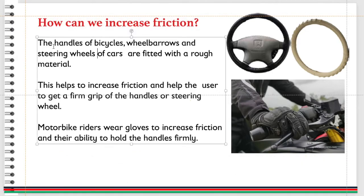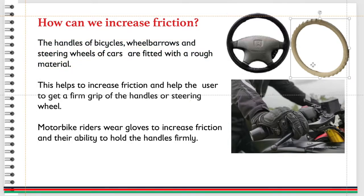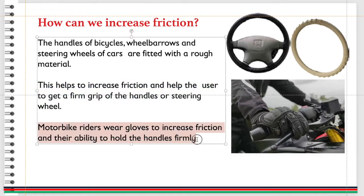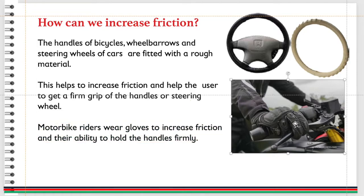The handles of bicycles, wheelbarrows, and steering wheels of cars are fitted with a rough material. This helps to increase friction and helps the user to get a firm grip of the handles or steering wheel. Motorbike riders wear gloves to increase friction and their ability to hold the handles firmly.